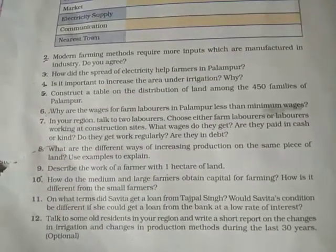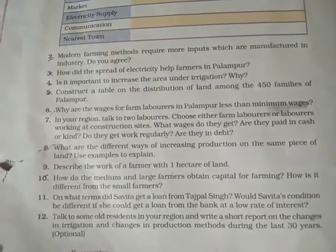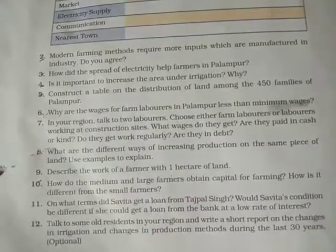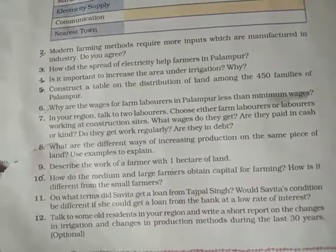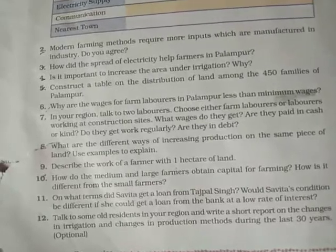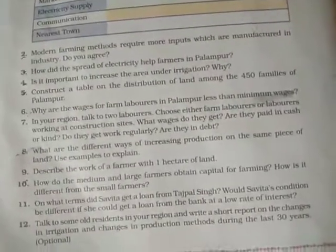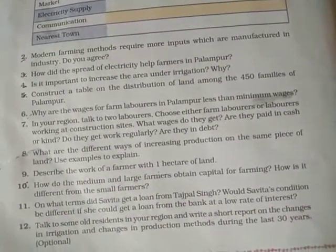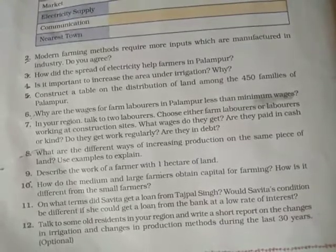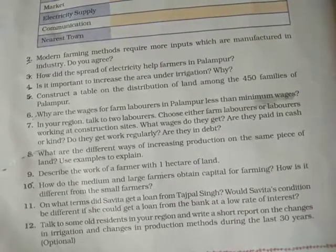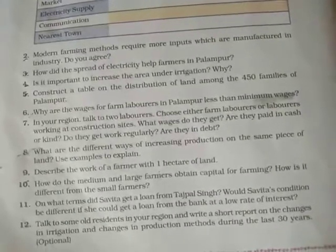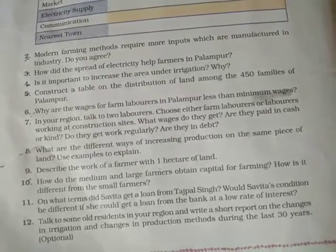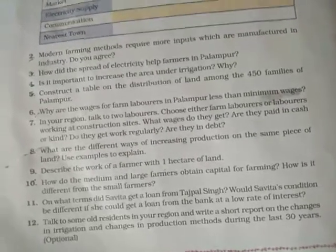Question five: Construct a table on the distribution of land among the 450 families of Palampur — you will do this on your own. In the first column, write 'Land in hectares,' and in the second column, write 'Number of families.'